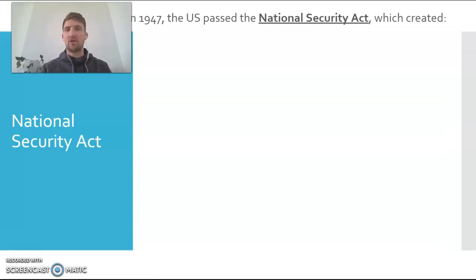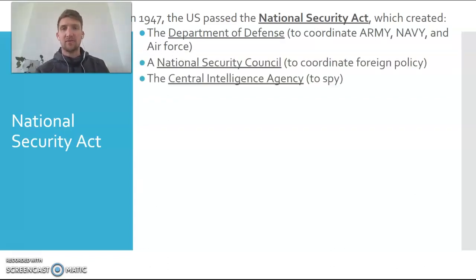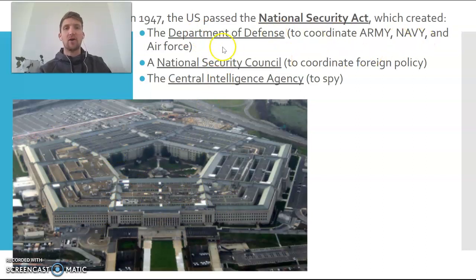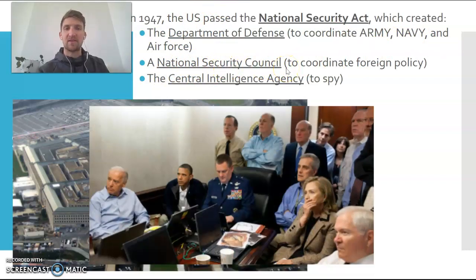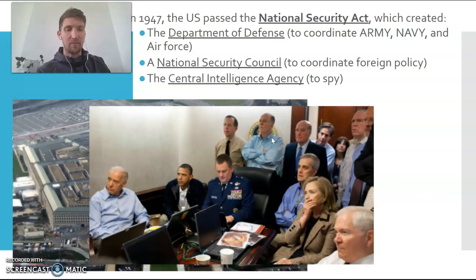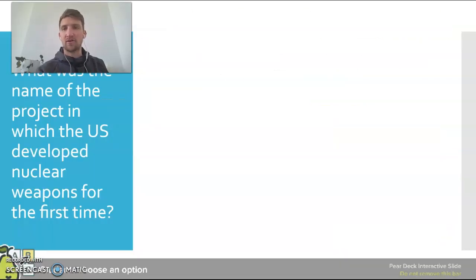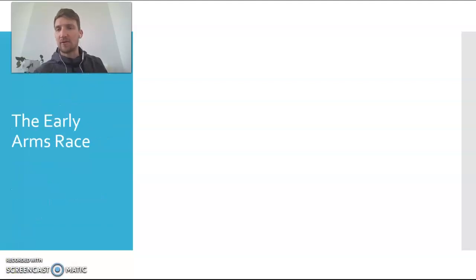In 1947, the United States passed the National Security Act, which created several departments we're familiar with. First, the Department of Defense, headquartered at the Pentagon — the largest building in the United States by square footage — which coordinates the Army, Navy, Air Force, and all military branches. Second, the National Security Council, which coordinates foreign policy and brings together the highest people in government. Third, the CIA — the Central Intelligence Agency — which is designed to gather intelligence, meaning information about other countries, through spying. Spying is a really big part of the Cold War.